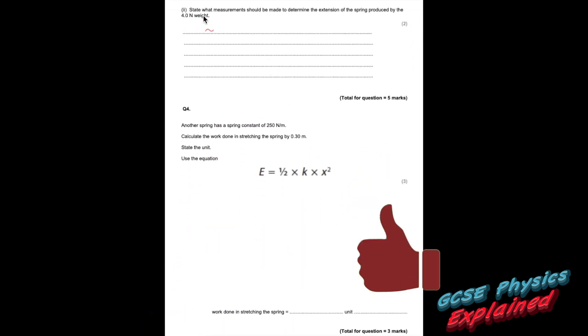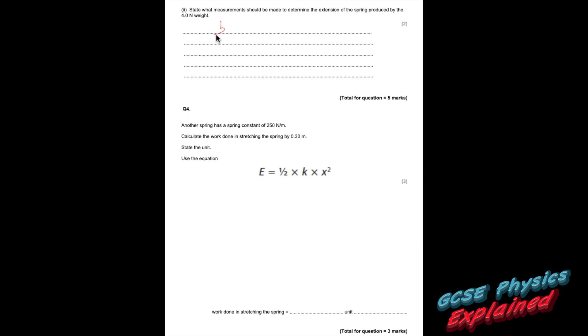Part 2. State what measurements should be made to determine the extension of the spring produced by the 4 newton weight. There's your spring before it's pulled, and there's your spring once it's been pulled. Measure that height — call that height 1. Measure that height — call that height 2. The extension is just the difference between the two.